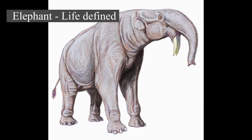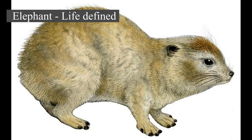African bush elephants and Asian elephants are listed as endangered, and African forest elephants as critically endangered by the International Union for Conservation of Nature, IUCN. One of the biggest threats to elephant populations is the ivory trade, as the animals are poached for their ivory tusks. Other threats to wild elephants include habitat destruction and conflicts with local people.